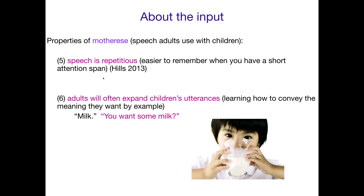Another property is that their speech is often very repetitious. It's like, 'Oh, look at the kitty. What a nice kitty. That's a really great kitty. Isn't that kitty cute?' We're talking about this kitty — it's very repetitious. But that's easier when you have a very short attention span as a young child does.